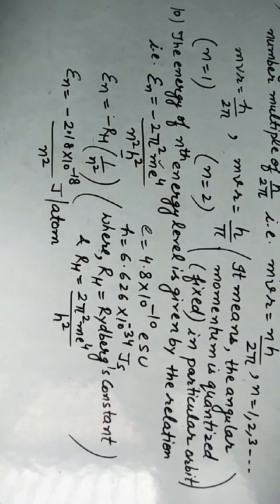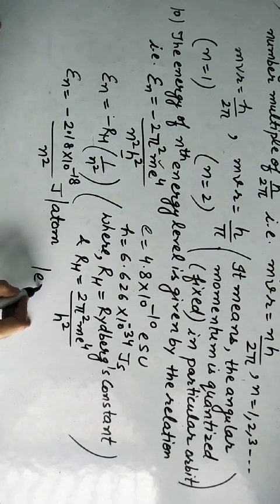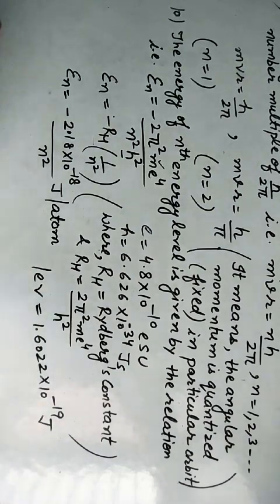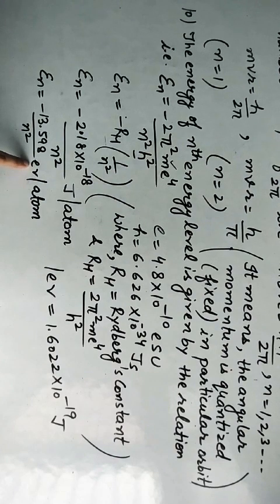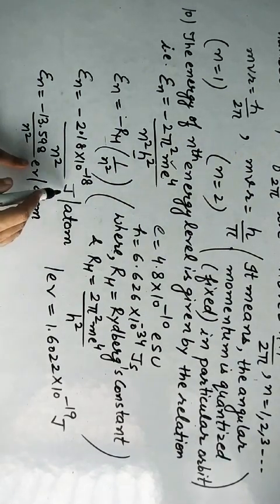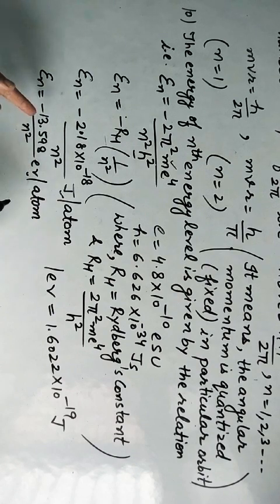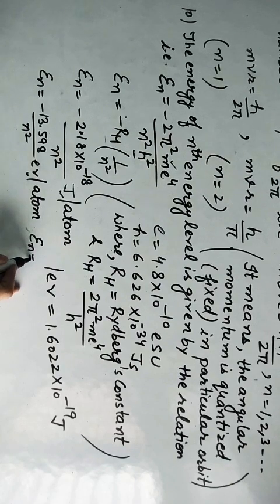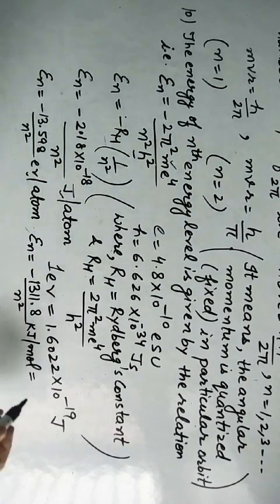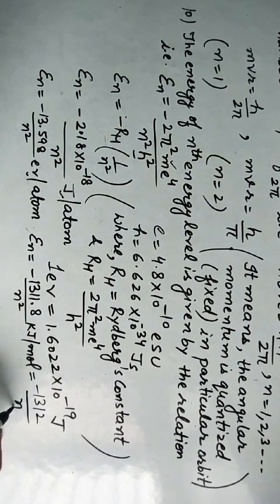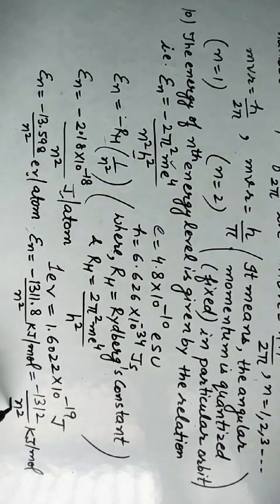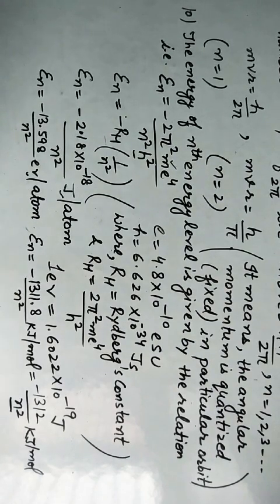Here N indicates the integral number — 1, 2, 3 — expressing the stationary states for the electron. In electron volts, 1 eV = 1.6022 × 10⁻¹⁹ J. If we express in kJ per mole, the energy is approximately −1312/N² kJ per mol.